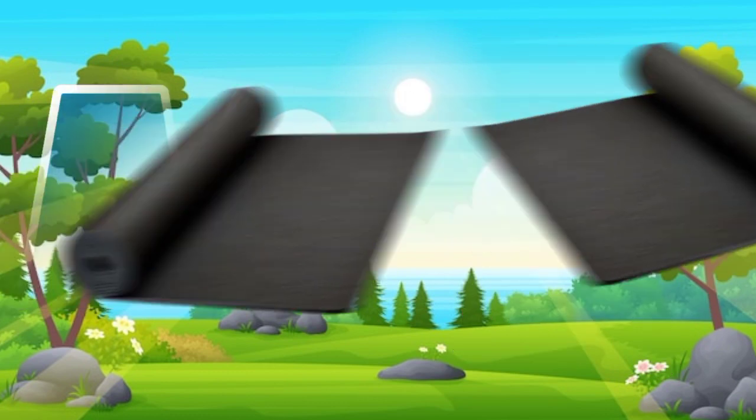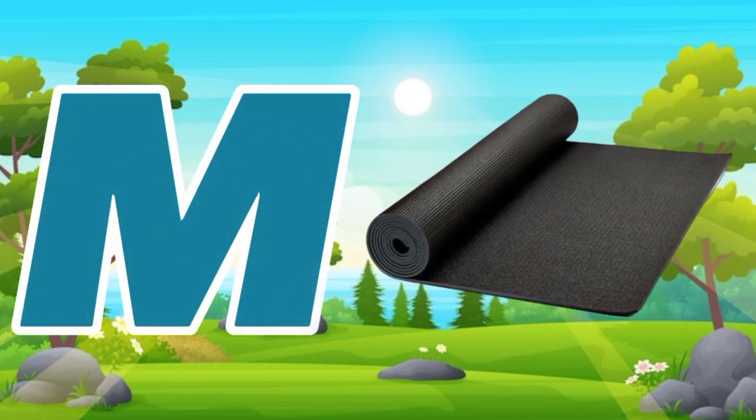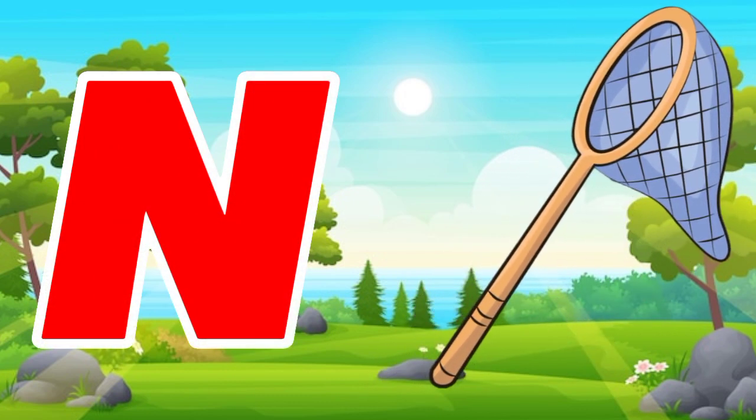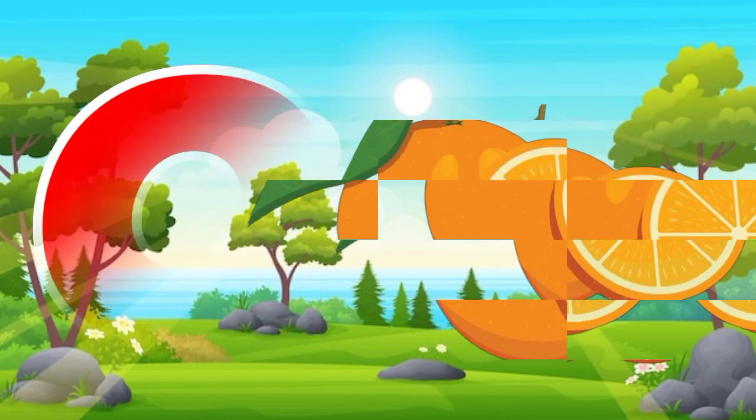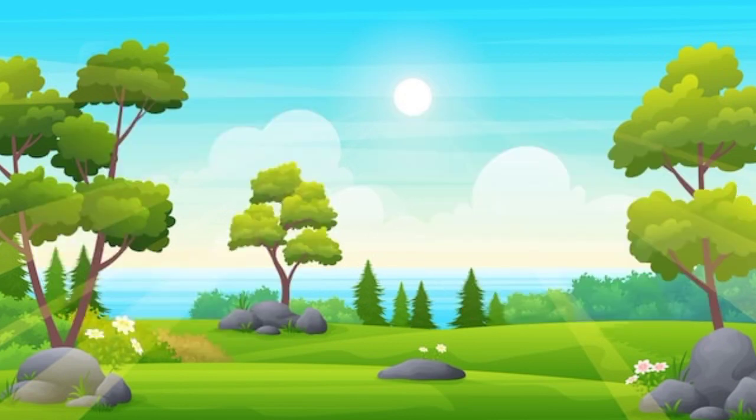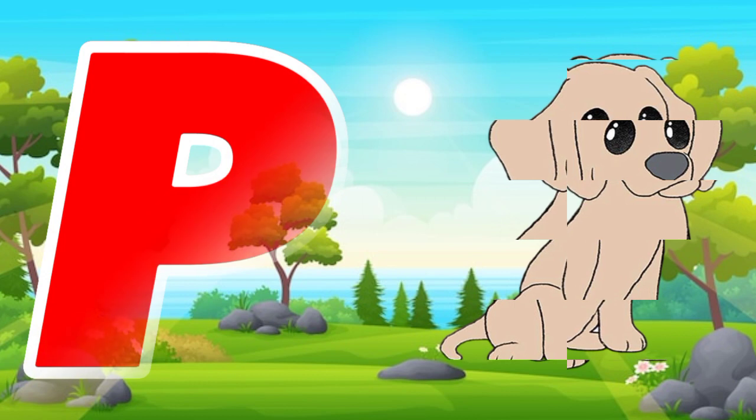M is for mat, m-m-mat. N is for net, n-n-net. O is for orange, o-o-orange. P is for pet, p-p-pet.